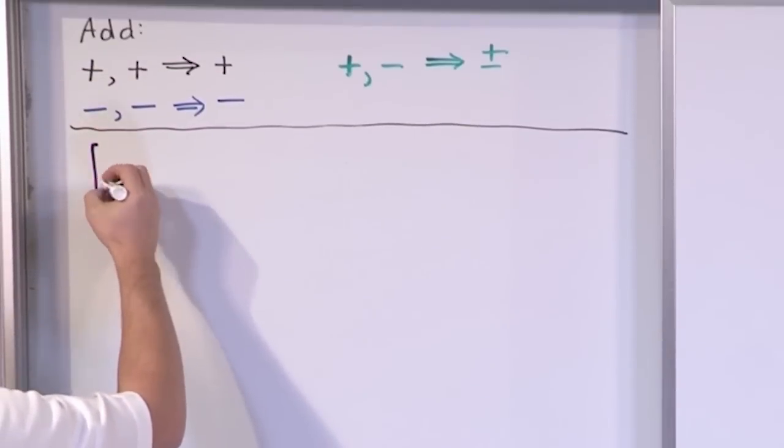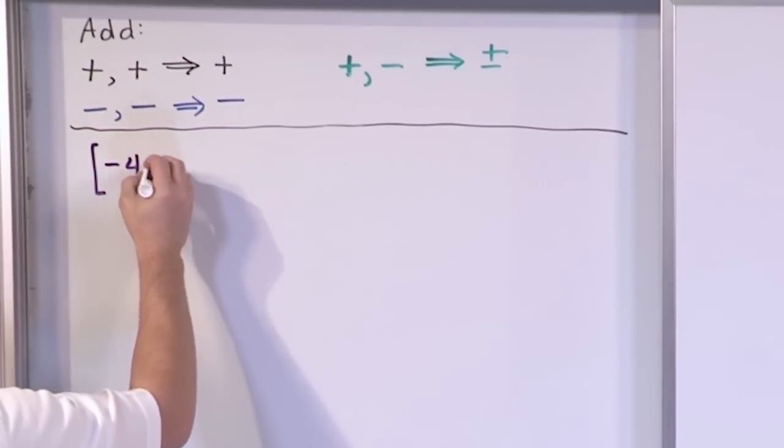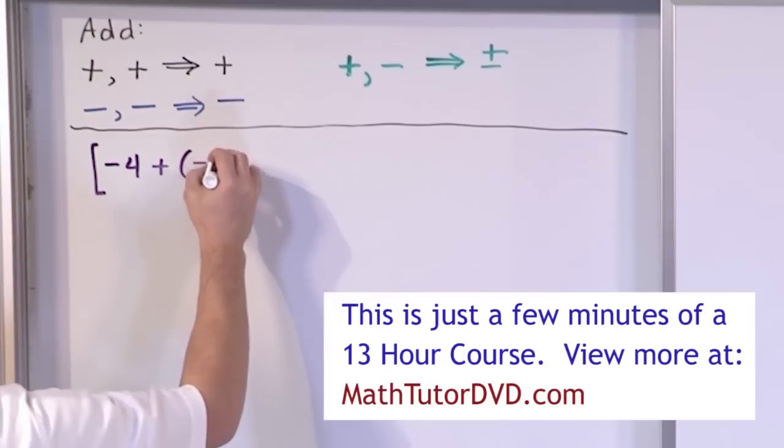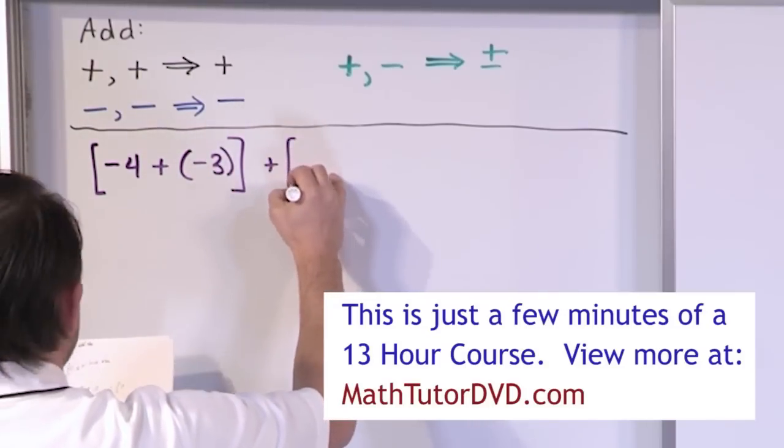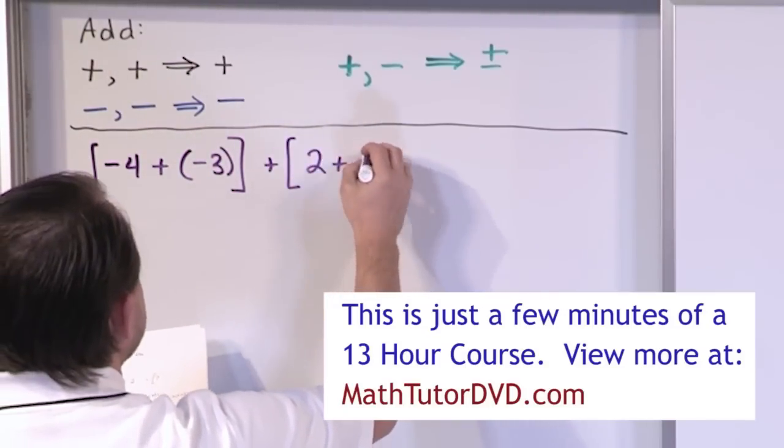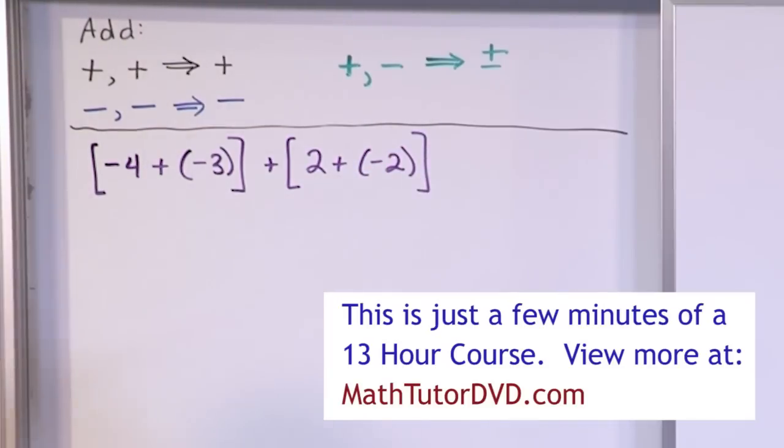All right, so let's continue building up our complexity a little bit. Negative 4 plus negative 3, and then the next bracket is 2 plus negative 2, like this.